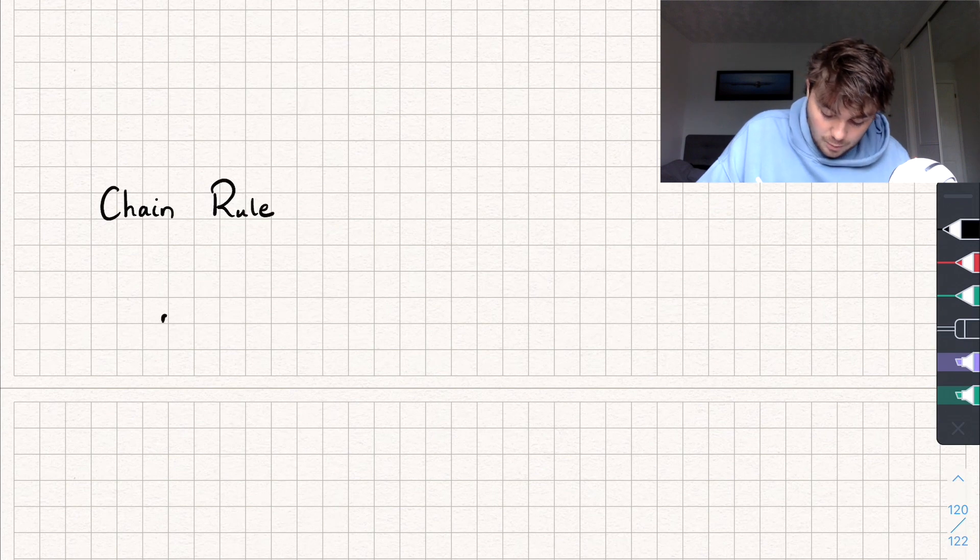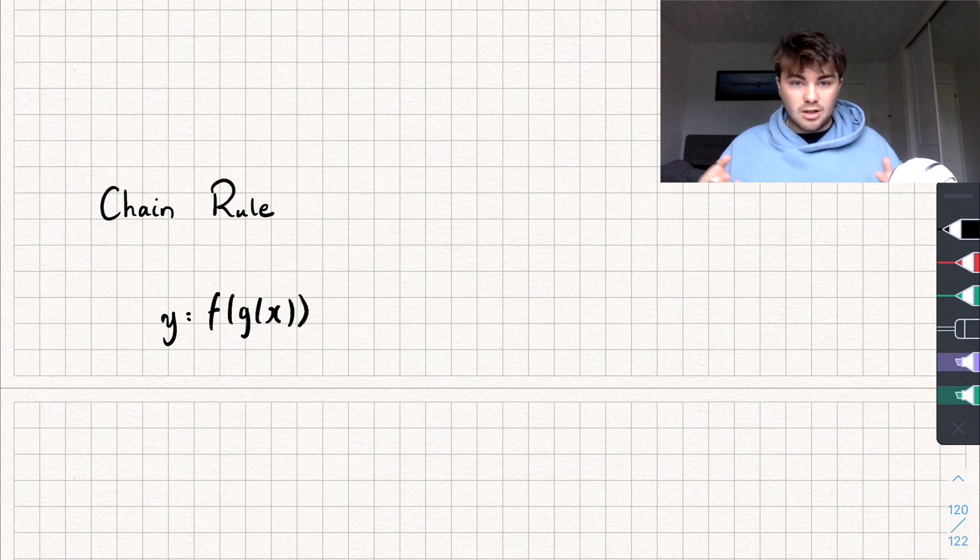And so this might look something like this, where we've got y equals f of g of x, like this. And so if you want a real example, like in terms of more math-y stuff, that might be something that looks like this.